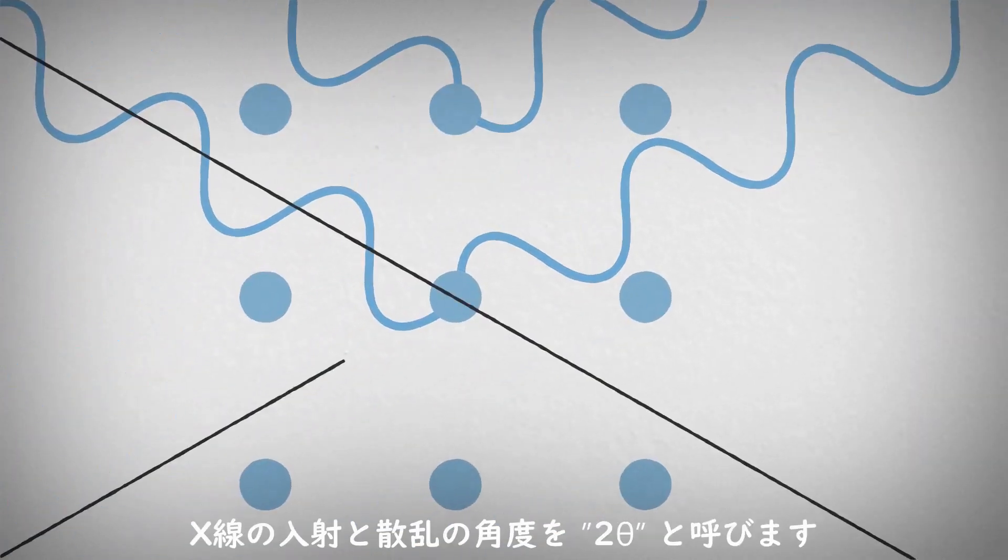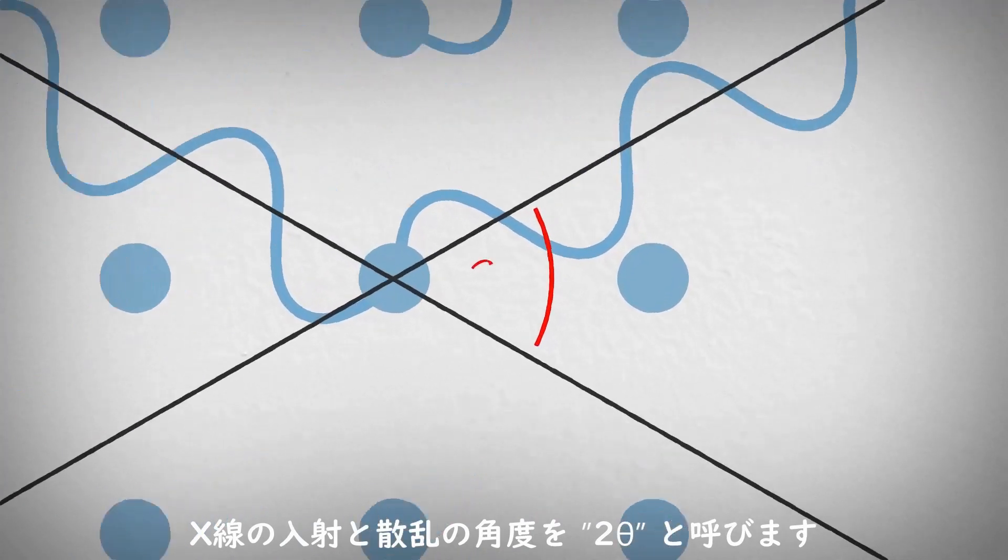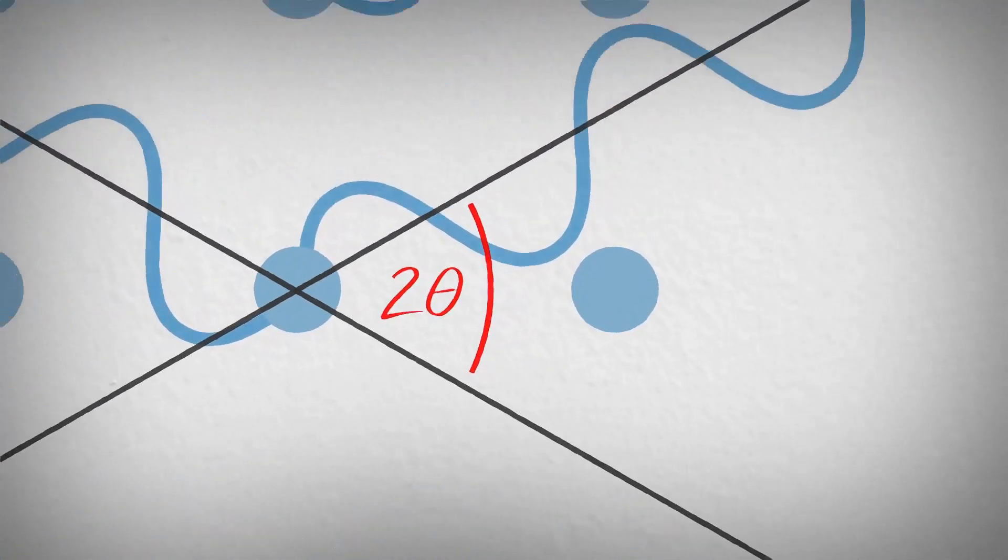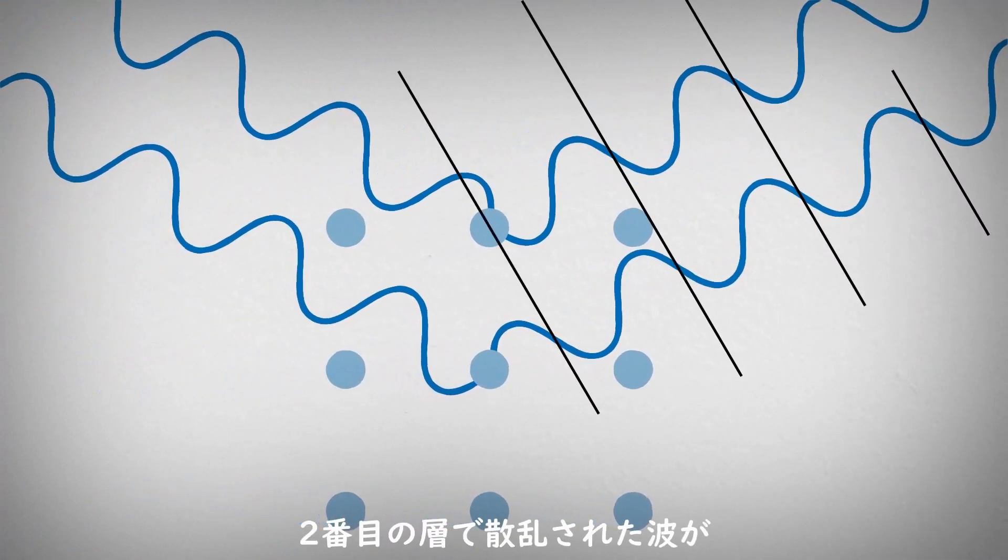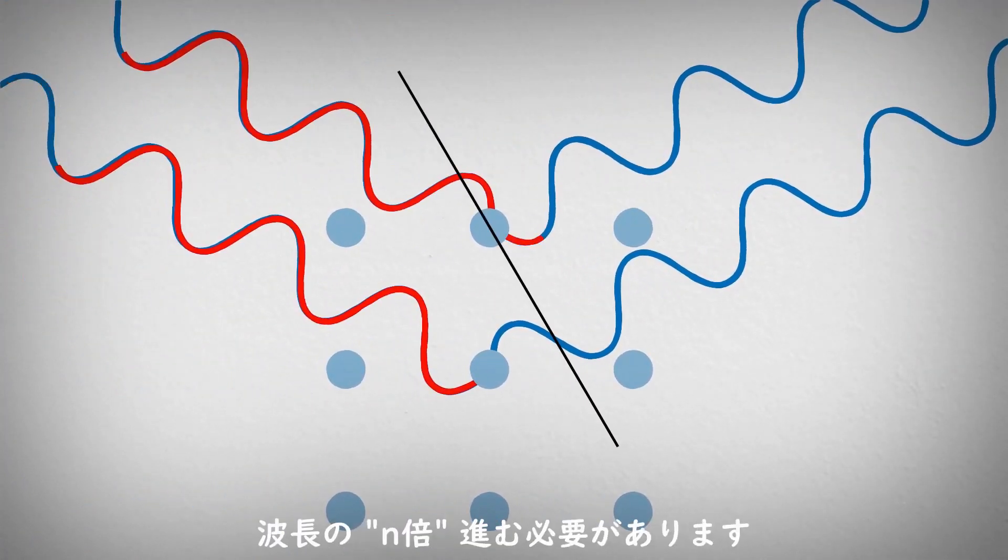The angle between the incident and the scattered beam is called two theta. In order for constructive interference to occur, the scattered waves must be in alignment, meaning that the second wave must travel a whole number of wavelengths.